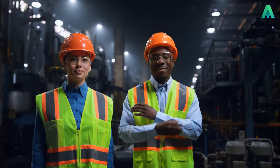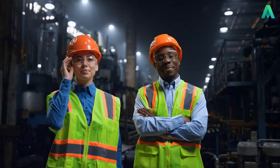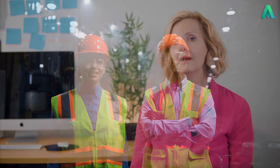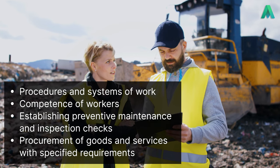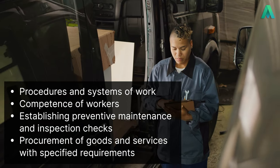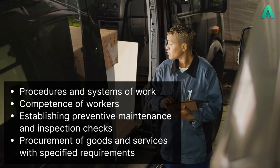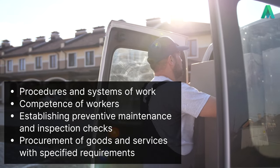They must also have measures in place to monitor and control the processes to ensure that they are being carried out as intended, and to identify and address any non-conformities. By establishing and controlling these processes, the organisation can ensure that they are meeting their OHS objectives and overall OHS commitments from Clause 6. This operational control may be in the form of procedures and systems of work, competence of workers, establishing preventive maintenance and inspection checks, or procurement of goods and services with specified requirements.